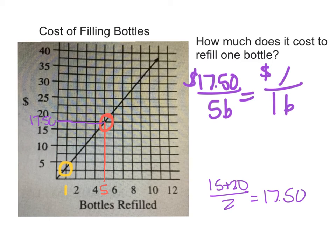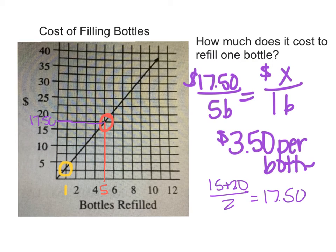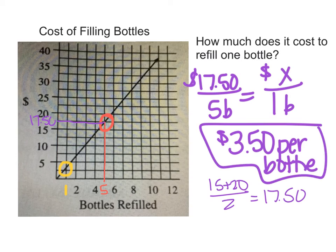So we've learned that it costs 17.50 for five bottles, and we want to know the cost of one bottle. So I'm going to put the one with the bottle, one bottle, and we'll set it up this way. So now what I can do is 17.50 times one, which is just 17.50, divided by five. And I find out that it is 3.5, which ends up being $3.50 per bottle. So there's our unit rate from a graph.